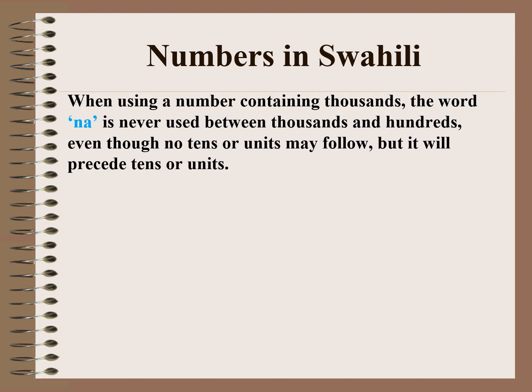When using a number containing thousands, the word na, which means 'and' in English, is never used between thousands and hundreds, even though no tens or units may follow. But it will precede tens or units. For example, one thousand three hundred and twenty in Kiswahili means elfu moja, mia tatu, na ishirini. The word na is used between three hundred and twenty, but not between thousands.